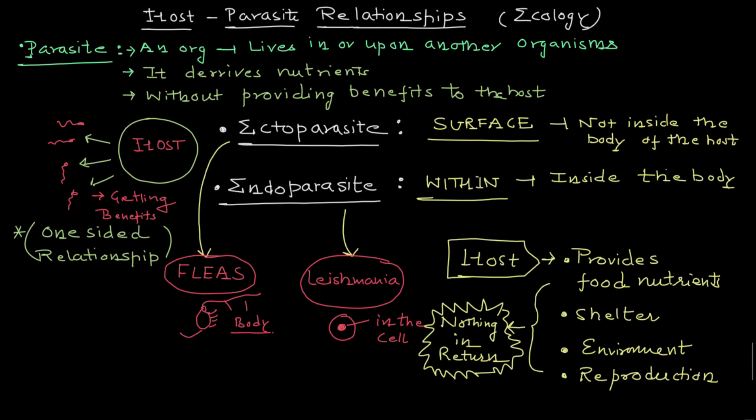These are some of the important features of host-parasite relationships. We have studied the ecology of the host-parasitic relationship — not in too much detail, but the introductory part. We have seen what the host is, what ecto and endoparasites are, and some examples. The malaria parasite Plasmodium has four different types: Plasmodium ovale, Plasmodium malariae, Plasmodium vivax, and Plasmodium falciparum — all of these are types of endoparasites.